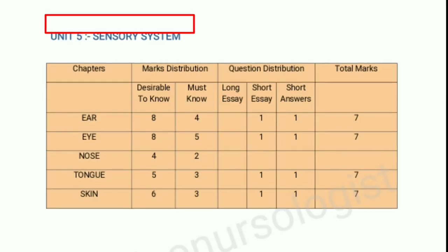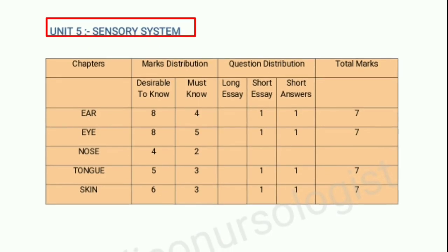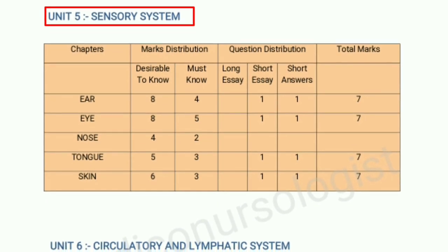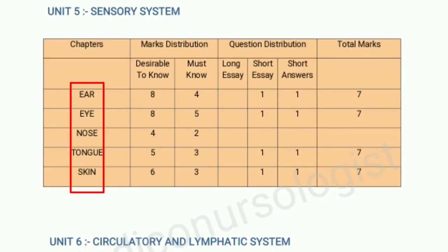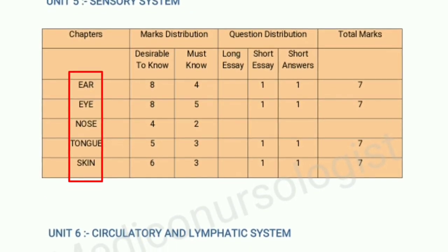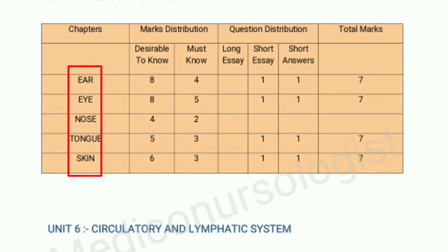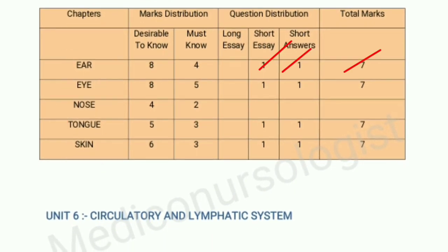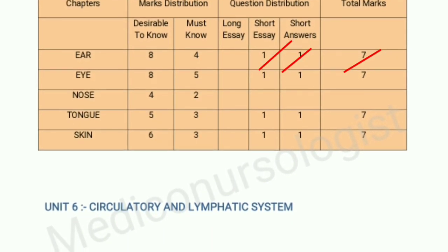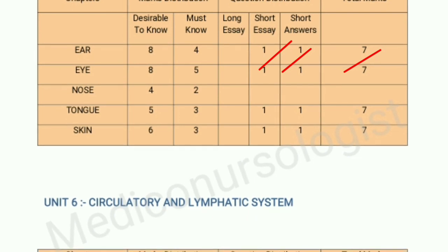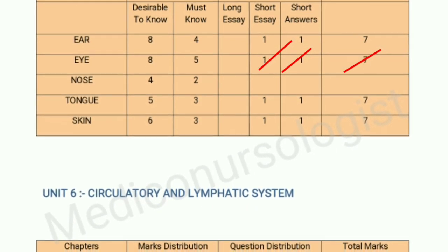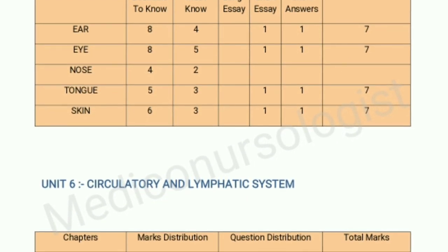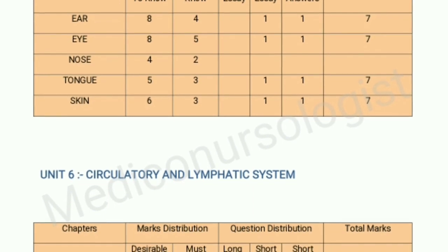Our fifth unit is the sensory system, which has five chapters: ear, eye, nose, tongue, and skin. The ear chapter carries 7 marks and the eye chapter also carries 7 marks — 1 question for 5 marks and 1 question for 2 marks — with the same type of marks distribution across the chapters.